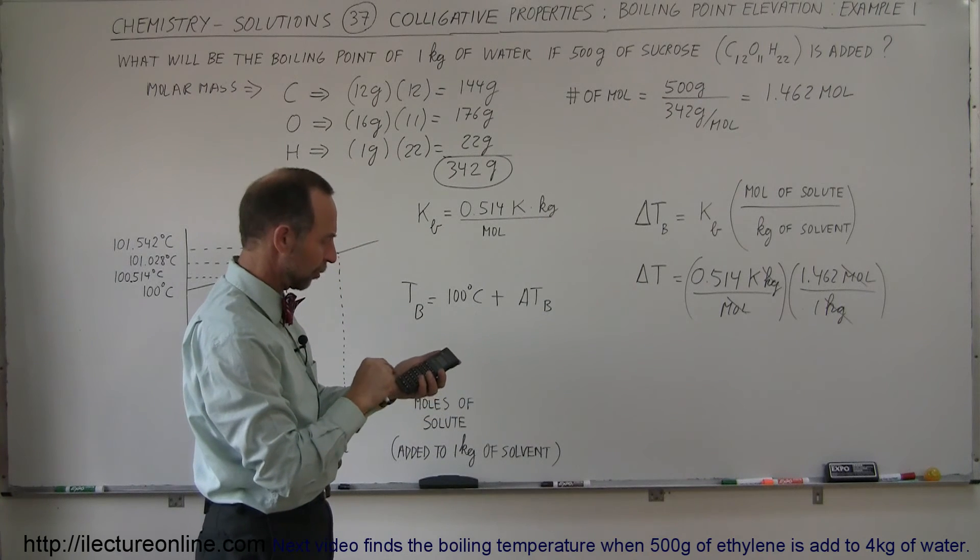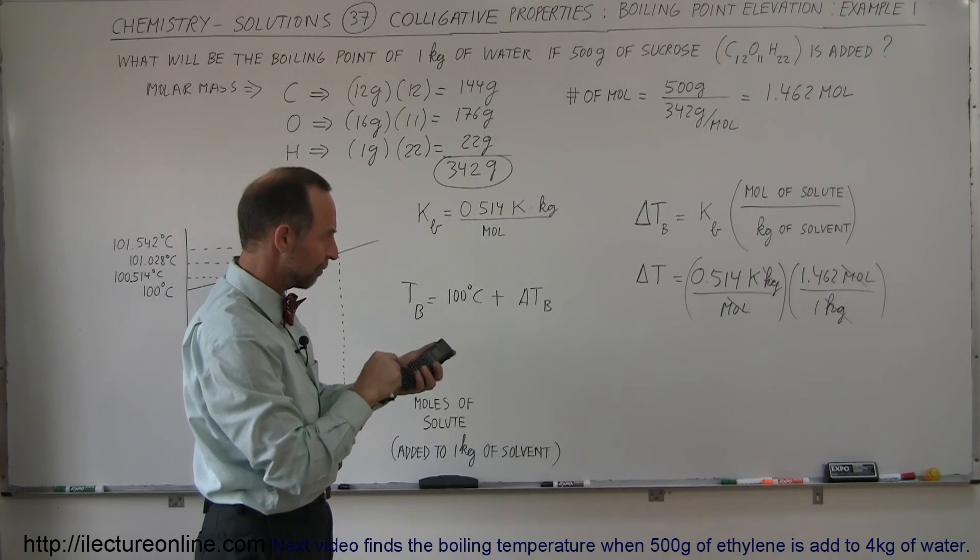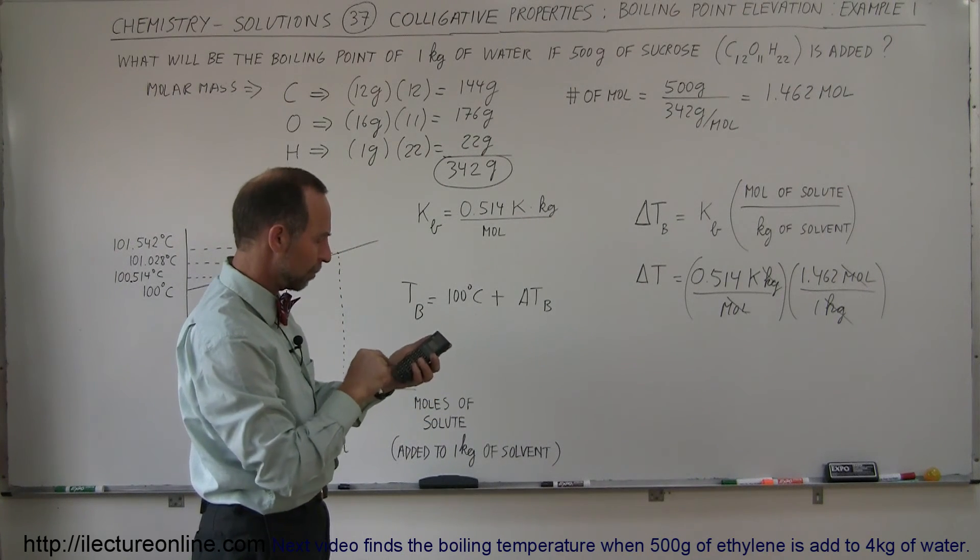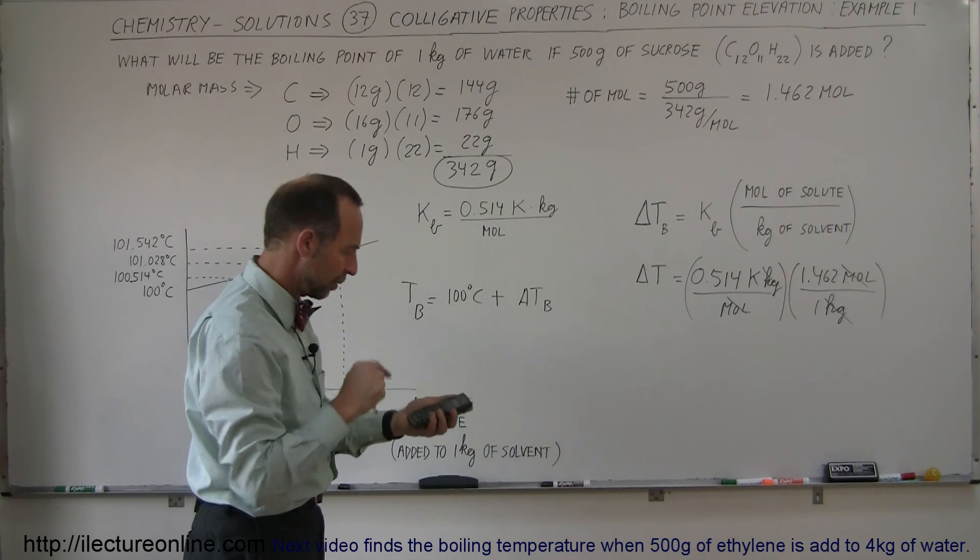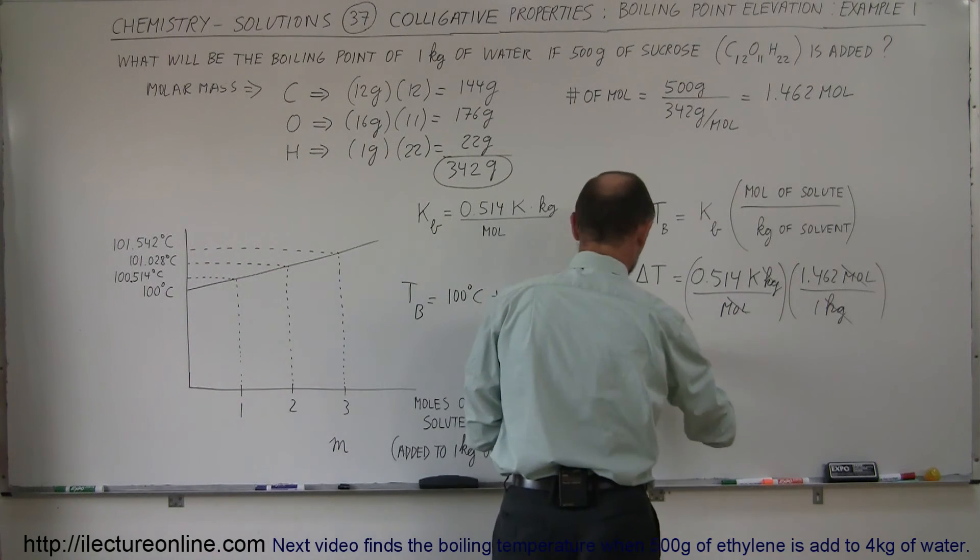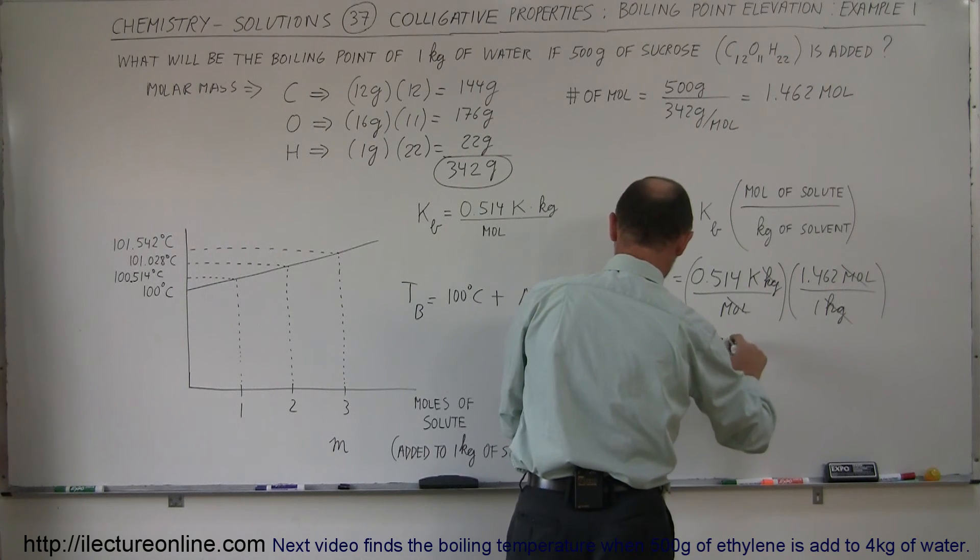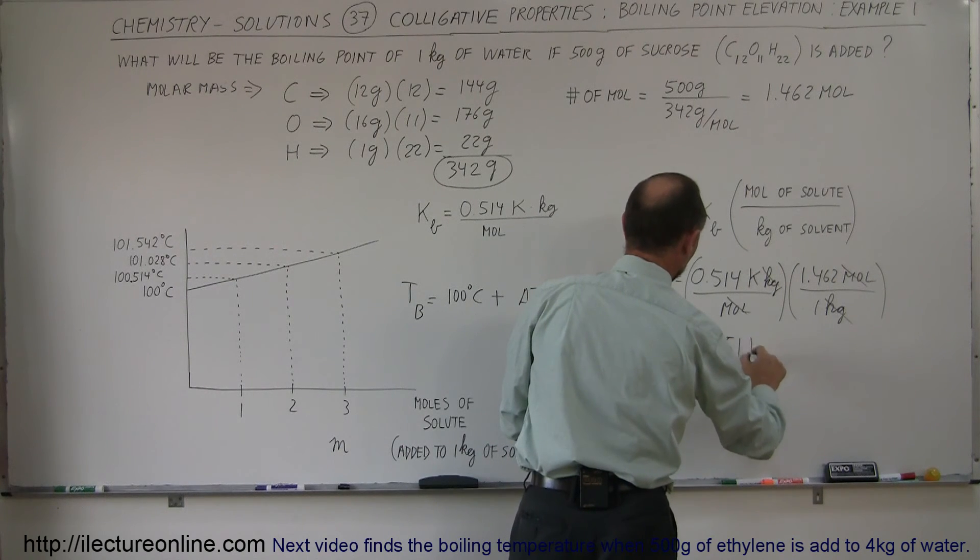That would be the change, the increase in the temperature. So 0.514 times 1.462 equals, and so the boiling temperature would be increased by 0.751 Kelvin.